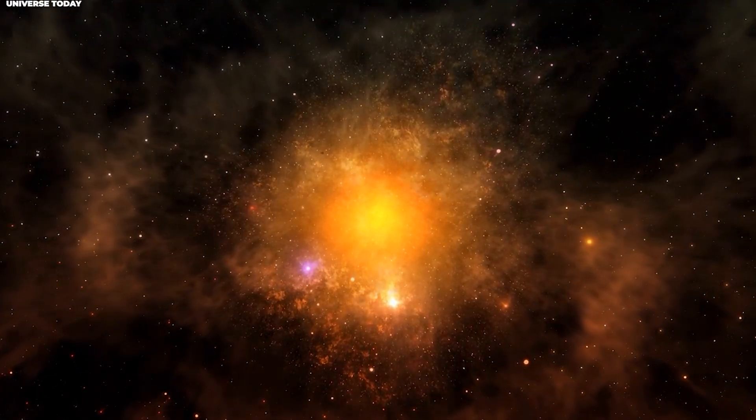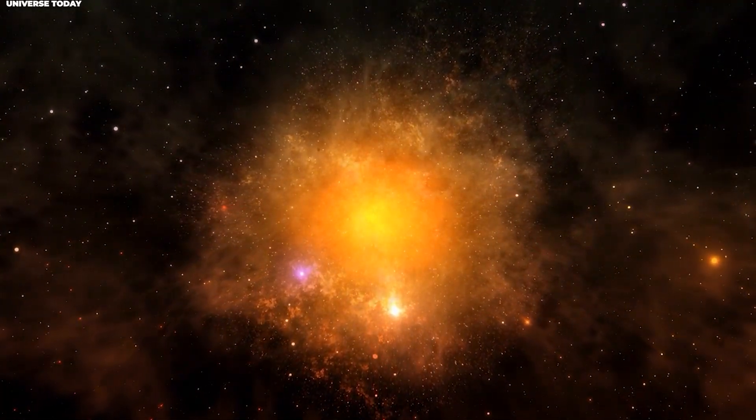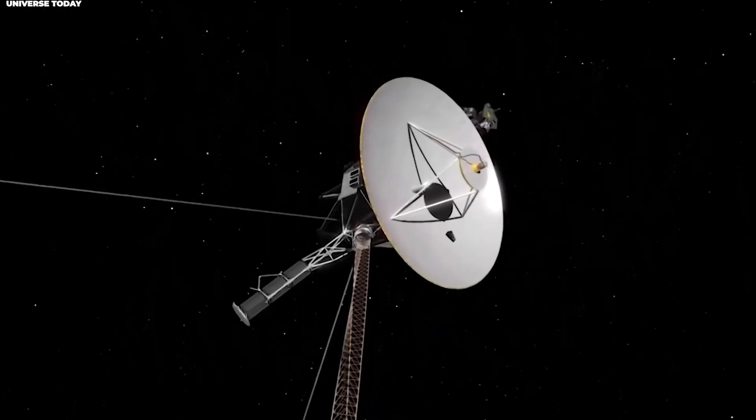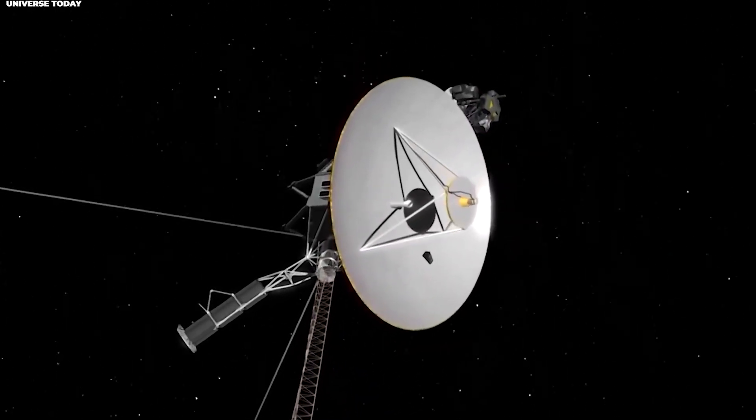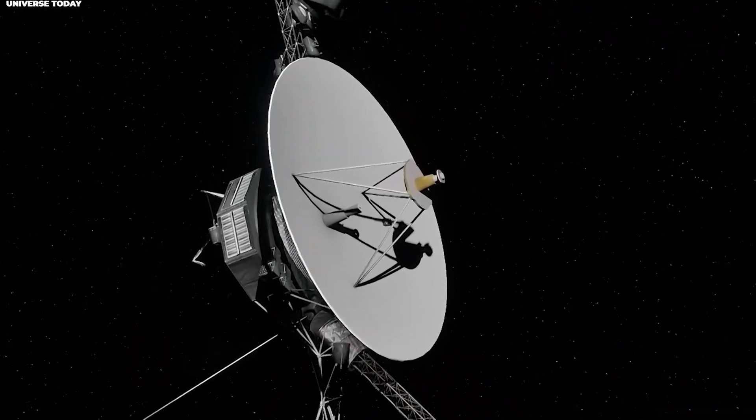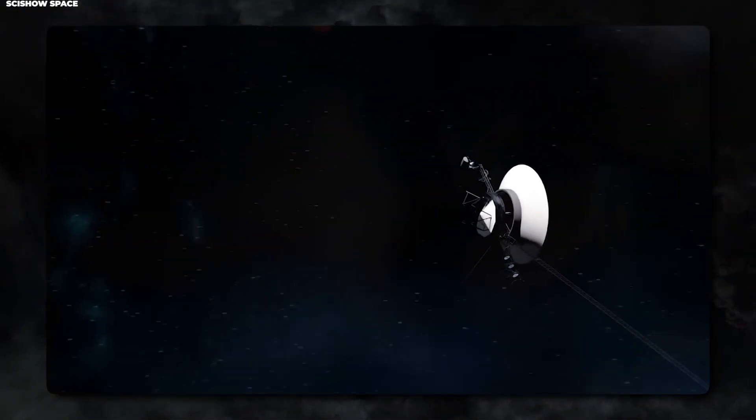Outside of it, you're in interstellar space, the realm between the stars, where the environment is shaped by other stars in our galaxy, rather than our Sun. Voyager 1 crossed that boundary, called the heliopause, and has been sending back data about interstellar space ever since. It's giving us our first real measurements of what exists in the space between stars.